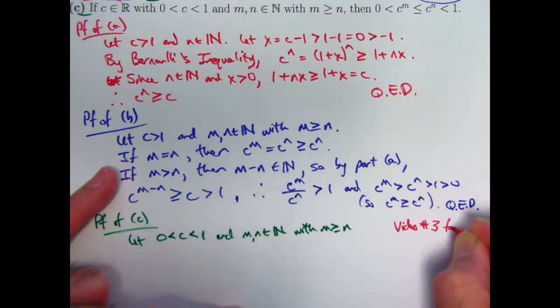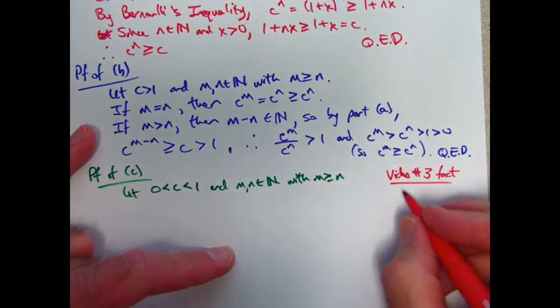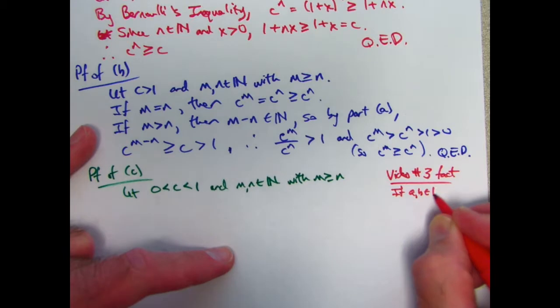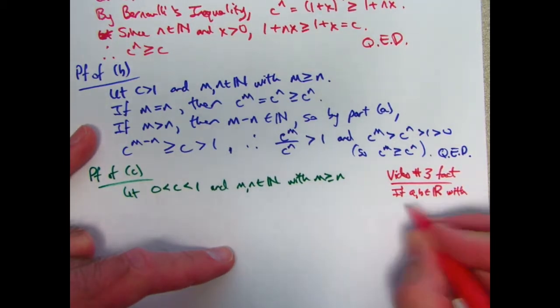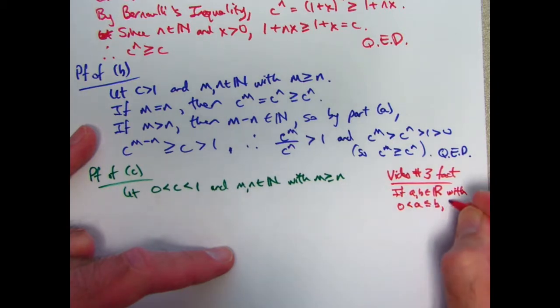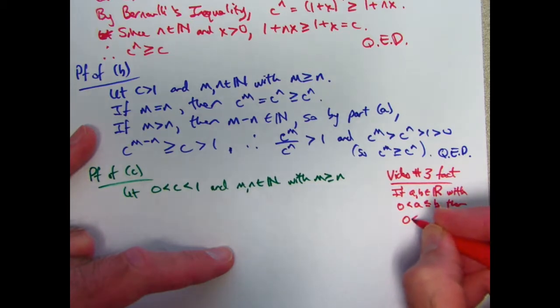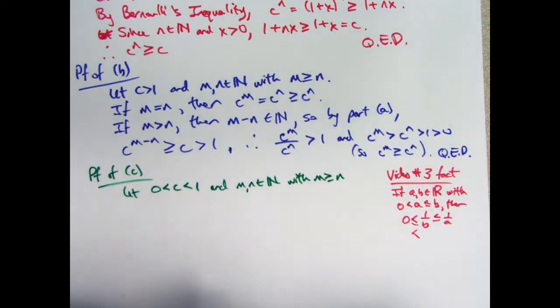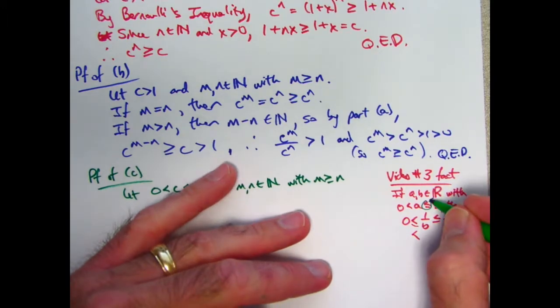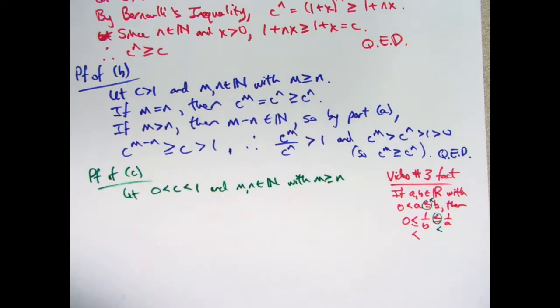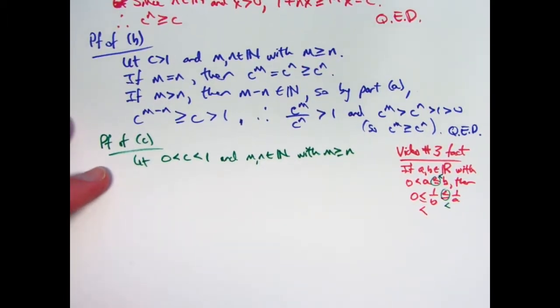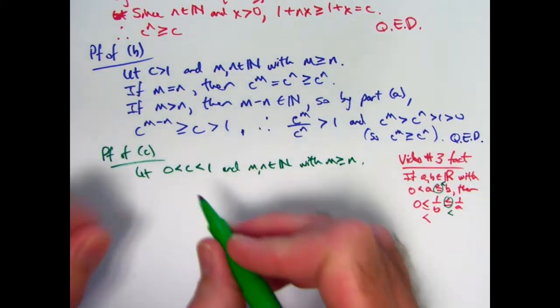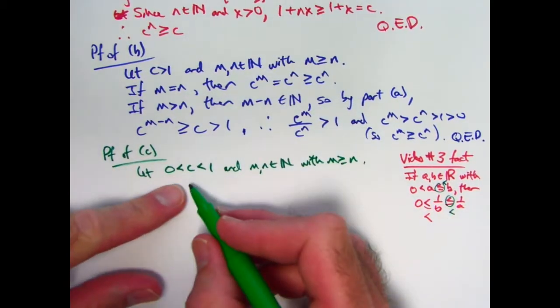Video number 3 fact. You could go back and watch video number 3. Let me just state the main fact. In that video, I wrote it like this. If a and b are real numbers, with 0 < a ≤ b, then 0 would be less than 1/b ≤ 1/a. This is definitely true. I think I actually just wrote less than or equal to there, but a strict less than would be fine as well. And in fact, I didn't prove this, but if this is a strict inequality, then this would be a less than as well. I didn't prove that part of it, but it's an easy modification of what I did. So I will use either of those facts. So c is between 0 and 1.